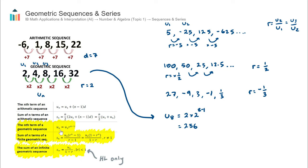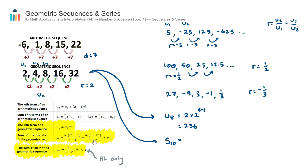That covers the first formula — finding the nth term of a geometric sequence. The next formula helps us find the sum of a certain number of terms. Using the same sequence, what if we wanted to find the sum of the first 10 terms — adding up 2 plus 4 plus 8 plus 16 plus 32, and so on? Doing that by hand would be quite time-consuming. There are two versions of the sum formula listed; you can use either. The right-hand version produces slightly cleaner working when the common ratio is less than 1, but the left-hand version always gives the correct answer.